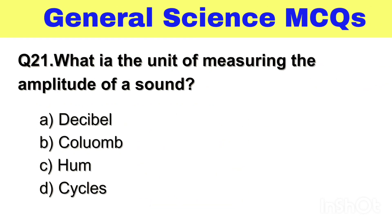Question No. 21. What is the unit of measuring the amplitude of a sound? Option A. Decibel, B. Coulomb, C. Hum, D. Cycles. The right answer, Option A. Decibel.